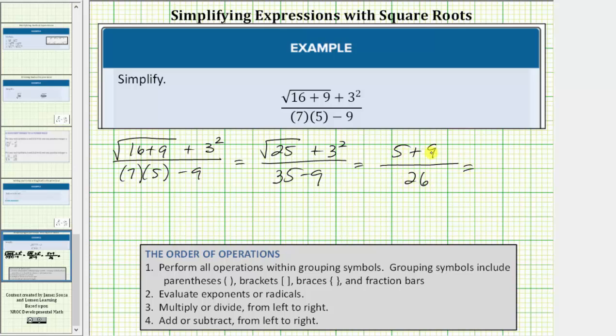In the numerator, five plus nine is equal to fourteen. So the given expression simplifies to fourteen twenty-sixths.